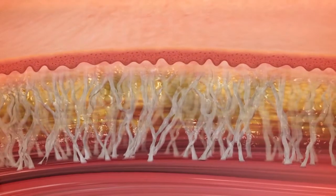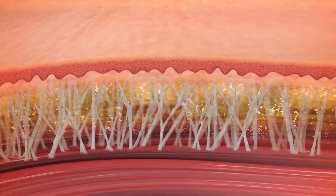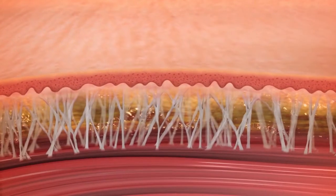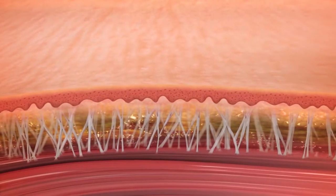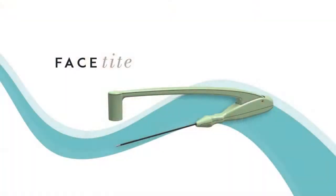Uniform RF thermal exposure aids, smooths, and evens contour results. Thermal contraction of fibrous septae and dermal collagen results in immediate contouring, which continues to improve over the next six months.